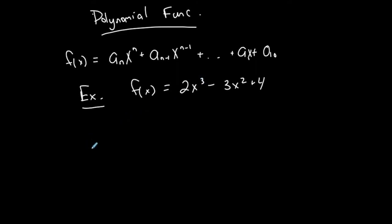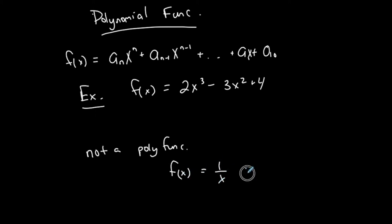Here's an example of a function that is NOT a polynomial: f(x) equals 1 over x, or f(x) equals the square root of x plus 3. Anything that doesn't have basic whole-number exponents on x is considered not a polynomial function.